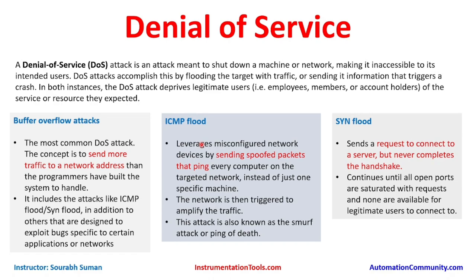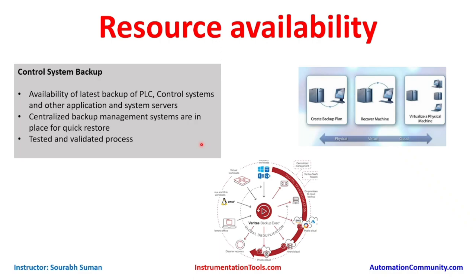Control system backup is also a type of resource availability. We need to keep the latest backup of PLC control systems and other applications on system servers so we can restore within the recovery time objective set by the organization. Centralized backup management systems should be in place for quick restore, and the process as well as the data should be tested and validated. Solutions available include Veritas, Acronis, proprietary solutions from vendors like Siemens, and Version Dog for automation and application servers.